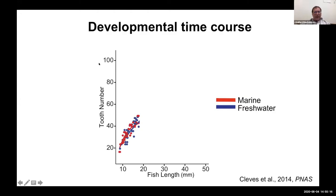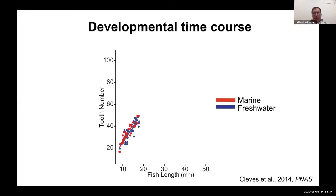Each dot here is a fish; the y-axis is the number of teeth and the x-axis is fish length, a proxy for developmental stage. Phil had done this experiment for a few weeks and walked into my office, shut the door, showed me his data and said, 'Craig, you said these populations were different.' I said yes. He said, 'Craig, they don't look different at all.' I said, 'yeah, I agree.' And then he said, 'what kind of thesis project is this?'